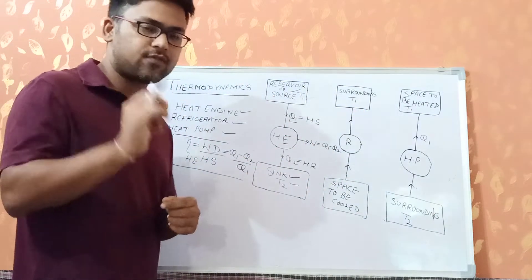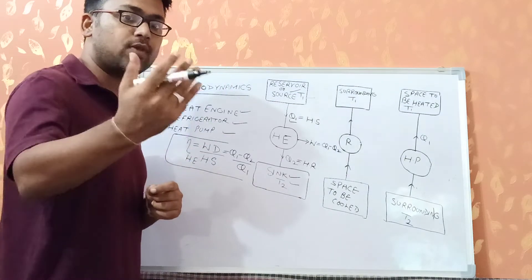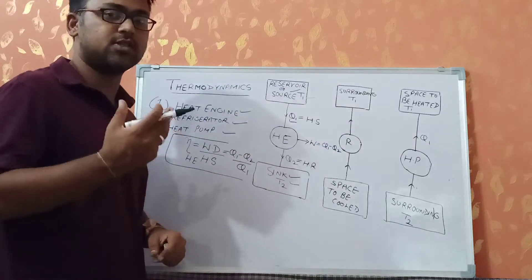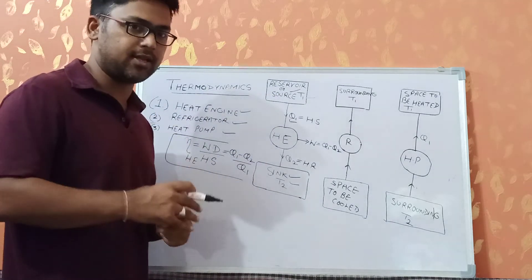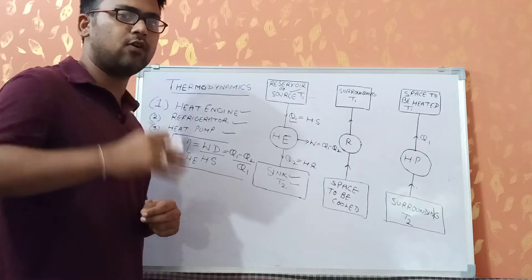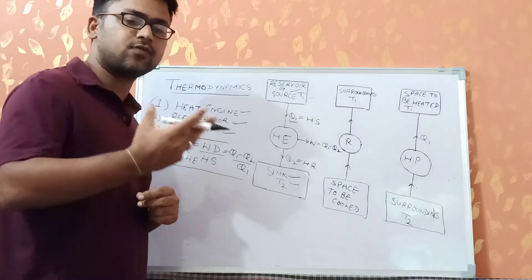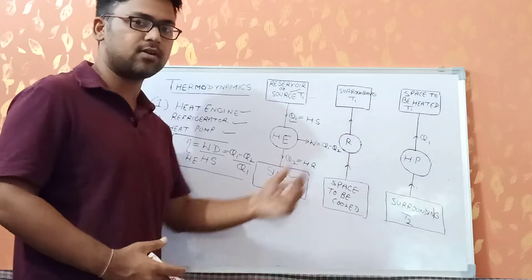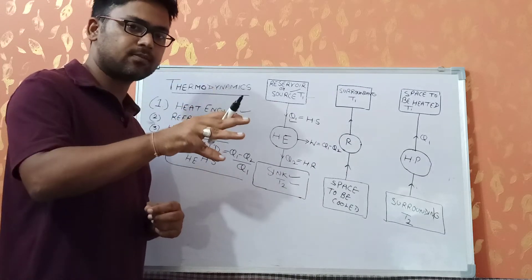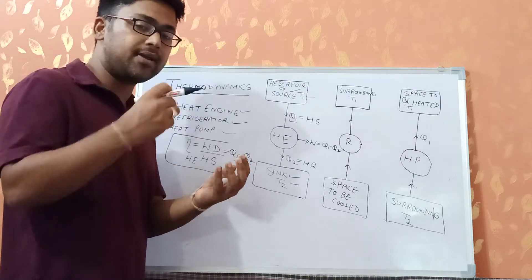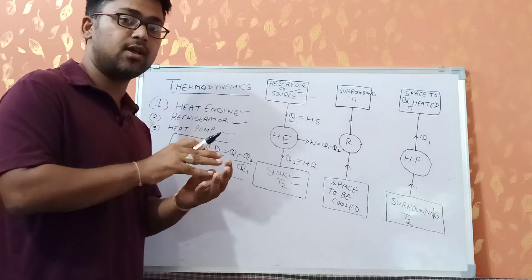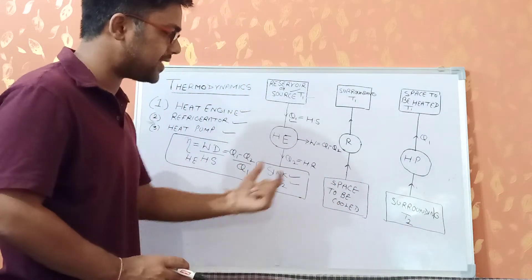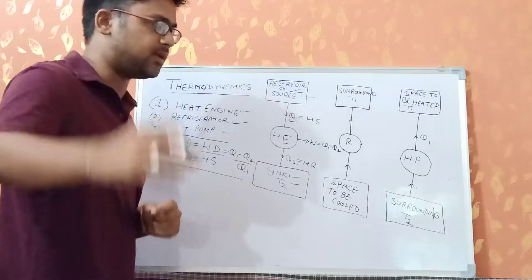Now coming to the refrigerator. The key difference between a heat engine and a refrigerator is the direction of heat transfer. In a heat engine, heat flows from higher temperature to lower temperature, which is a natural process. But in a refrigerator, we reverse this — we try to transfer heat from lower temperature to higher temperature, which requires work input from outside.